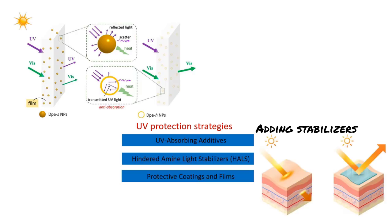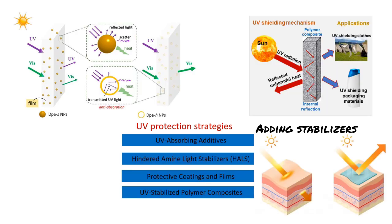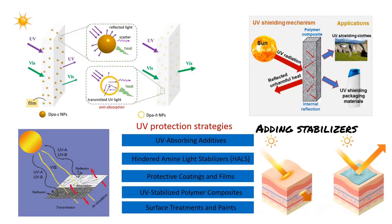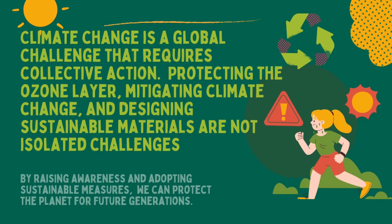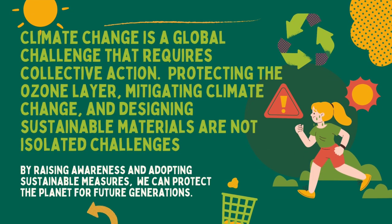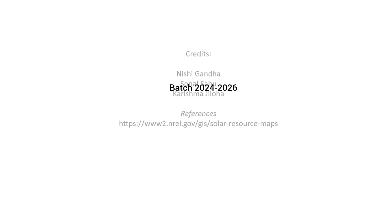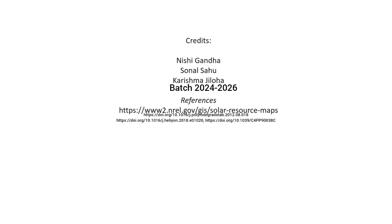These methods are crucial in extending the service life of polymer products exposed to sunlight. In conclusion, climate change is a global challenge that requires collective action. By raising awareness and adopting sustainable measures, we can protect the planet for future generations.